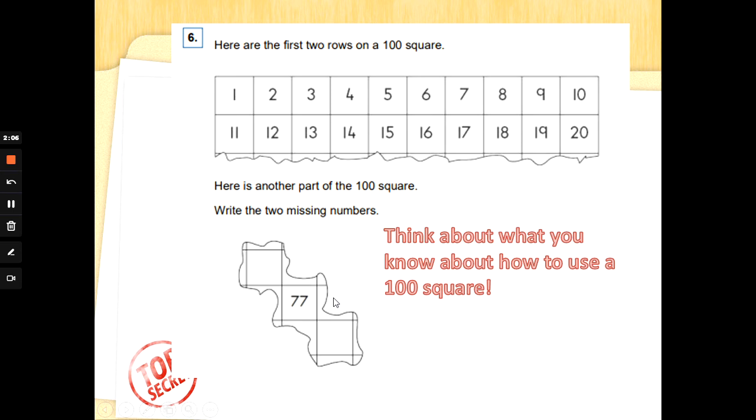We should know in year two that we count across in ones in a 100 square and down in tens. Might help you to work out what these two numbers are here. So I'm going to just go ahead and put 77, 78, and I know that if I jump down then in tens it would be 88 in that box.